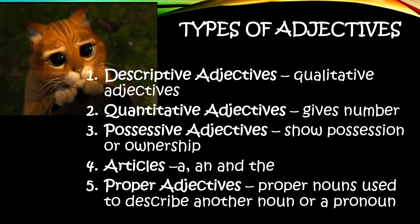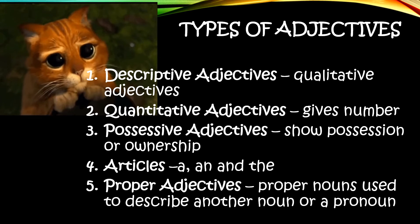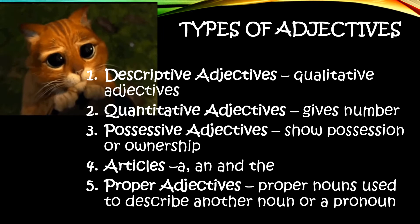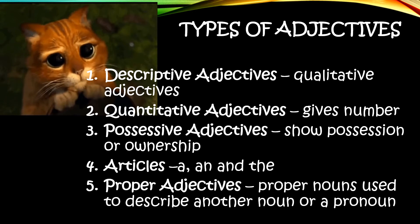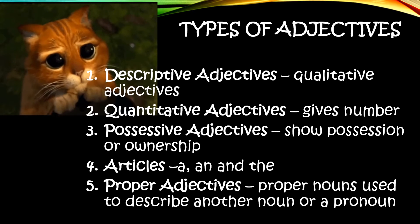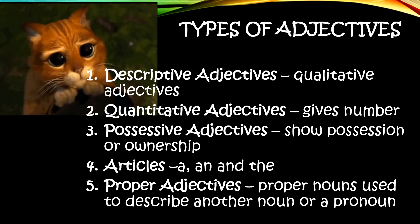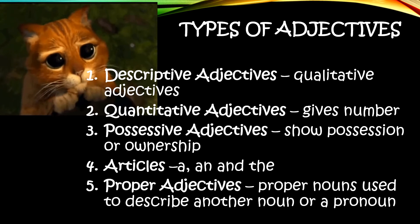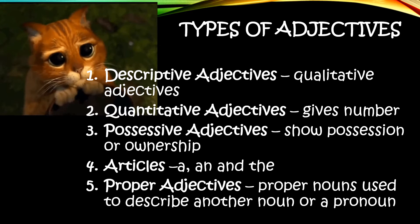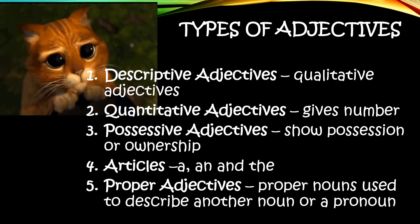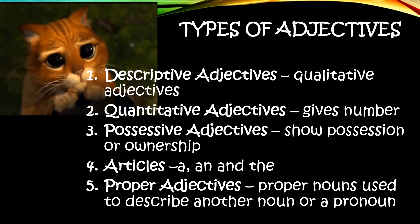3. Possessive adjectives — these adjectives can show possession or ownership. 4. Articles — these are a, an, and the. 5. Proper adjectives — these adjectives are proper nouns used to describe another noun or a pronoun.